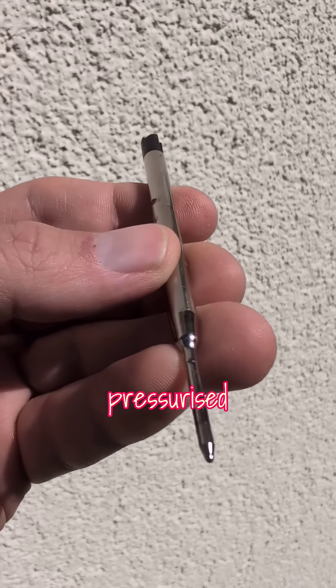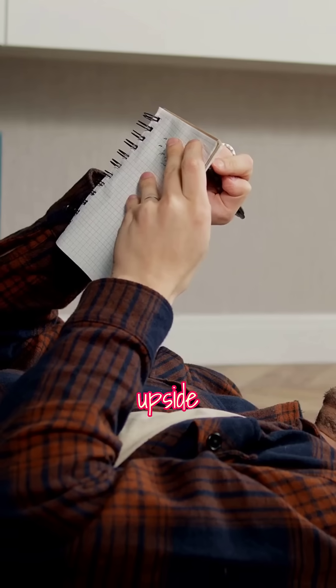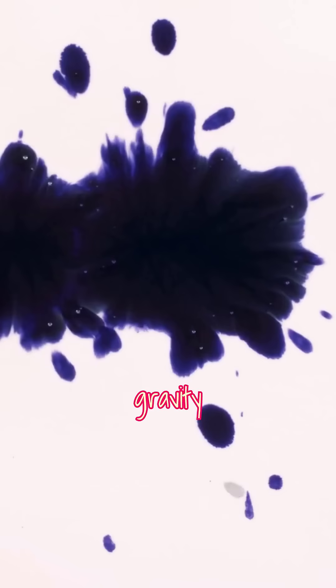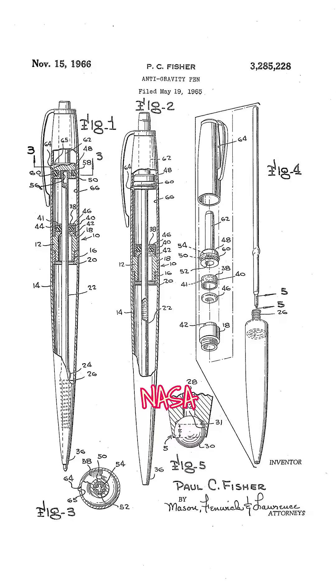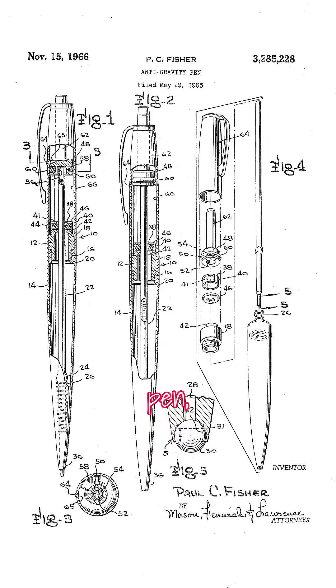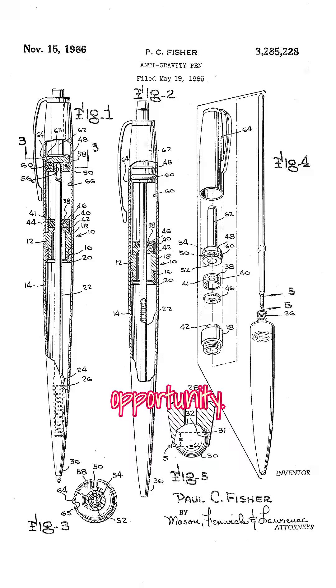Fisher had already been working on a pressurized ink cartridge that could write upside down and in zero gravity, but the added pressure made it leak. When NASA reached out in search of a safer pen, Fisher saw an opportunity.